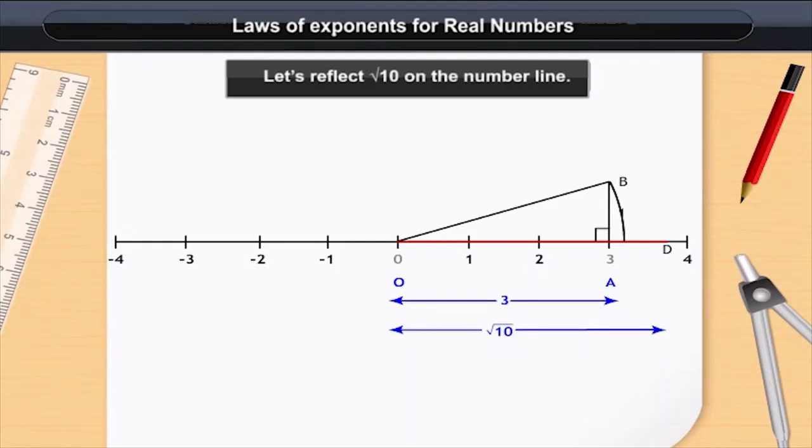Let us apply the Pythagoras theorem to the triangle OAB. OA is equal to 3 units and AB is equal to 1 unit.